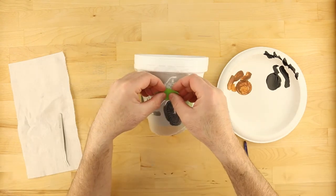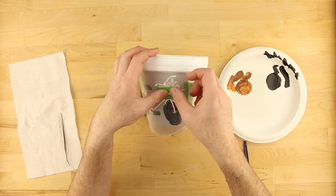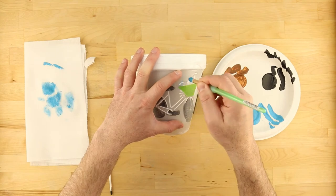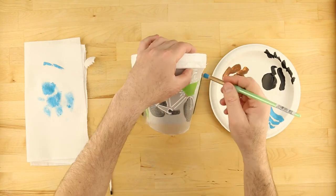Frog tape is also useful for masking small stencil elements. Continue masking and painting as needed for the other colors and stencil designs.